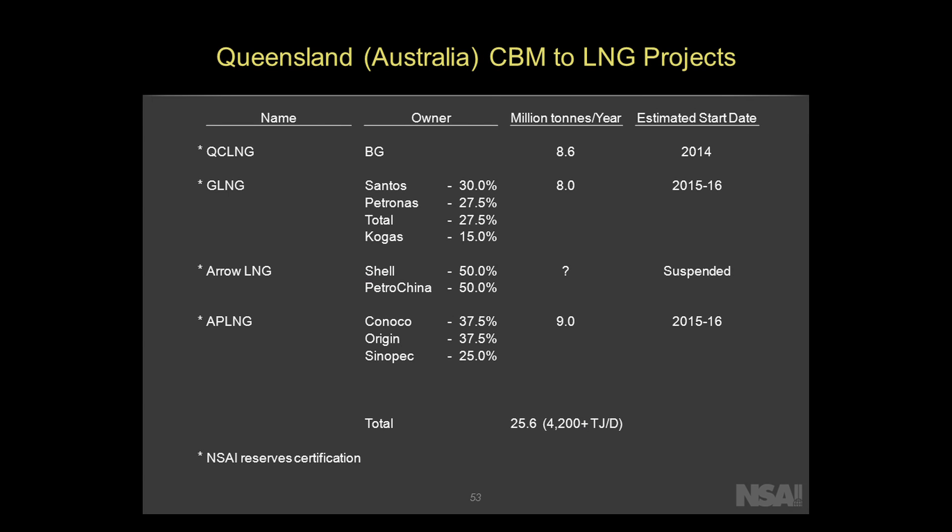In Queensland, Australia, there are multiple projects — four of them. One is a bit on hold, but they are very big projects. Coal bed methane has never before been put into LNG — LNG is not a new thing, but putting coal bed methane on a ship is. These projects are very expensive, and that's why one of them has been put on hold at this stage.